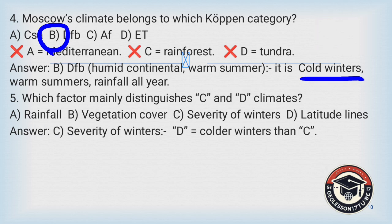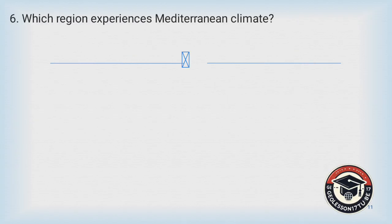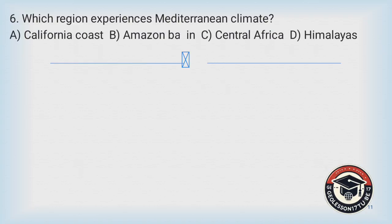The correct answer is C — severity of winters. Question number six: Which region has a Mediterranean climate type? A) California coast, B) Amazon basin, C) Central Africa, D) Himalayas.